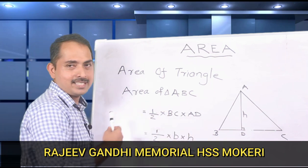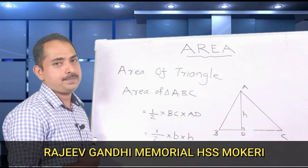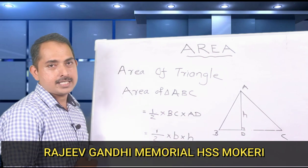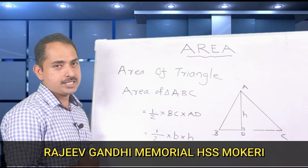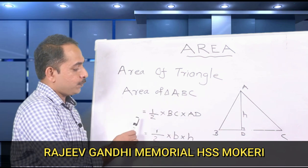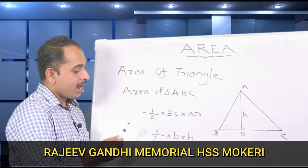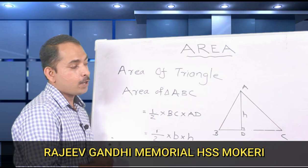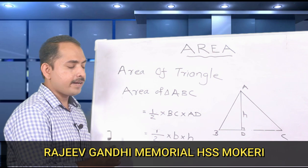We have a triangle ABC. We have to find the area of this triangle ABC, and AD is the perpendicular distance from the opposite vertex A to BC. So our equation is: area of triangle ABC = half × BC × AD. That is, half × base × height from the opposite vertex. This is the equation for finding the area of a triangle.